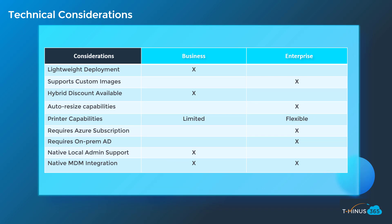With that, you want to fold in some technical considerations when comparing these two plans. Lightweight deployment has a heavy asterisk next to it. The business plan is the lightest deployment because all you have to do is assign a license to a user, just like you would with a base M365 plan. That cloud PC provisions in about 30 minutes, versus the enterprise plan, which has a lot more prerequisites as well as an Azure subscription requirement.